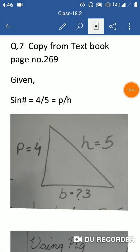Given: sin theta equals 4 by 5. Some people have theta represented on a triangle.